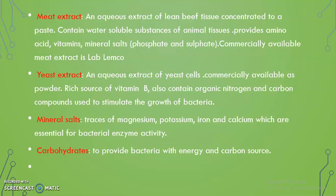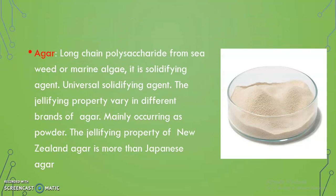Mineral salts: traces of magnesium, potassium, iron, and calcium are essential for bacterial enzyme activity. Carbohydrates provide bacteria with energy and carbon source. Agar is a long-chain polysaccharide obtained from seaweeds or marine algae used as a solidifying agent. The jellifying property of agar differs in different brands — mainly occurring as powder form. The jellifying property of New Zealand agar is more when compared to Japanese agar.